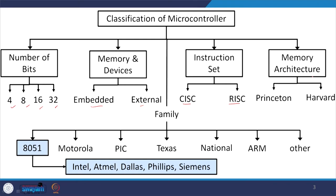Memory architecture can be either Princeton or Harvard type. Microcontrollers can come from various families: the 8051 family from Intel, Atmel, Dallas, Phillips, or Siemens; or they could be from Motorola, PIC, Texas Instruments, National Semiconductor, ARM, or other types.